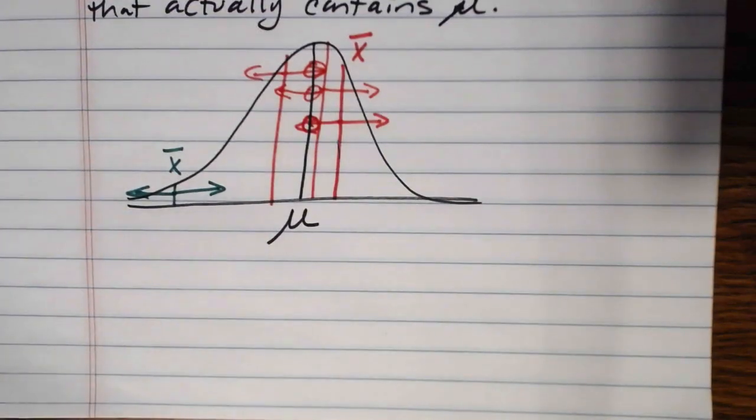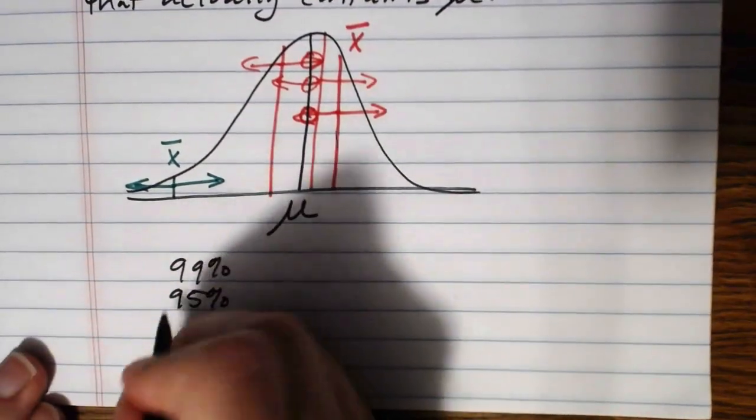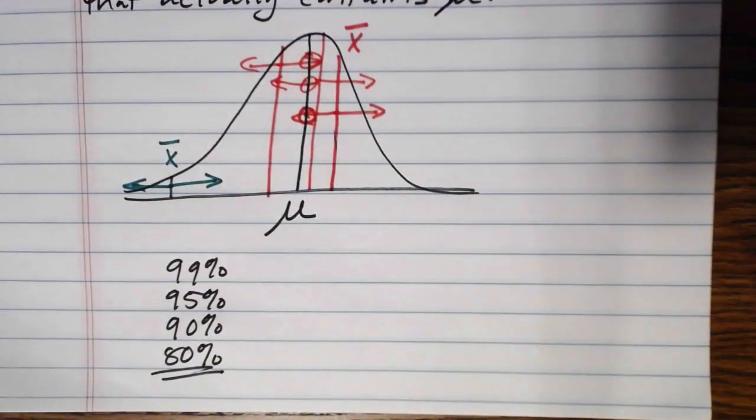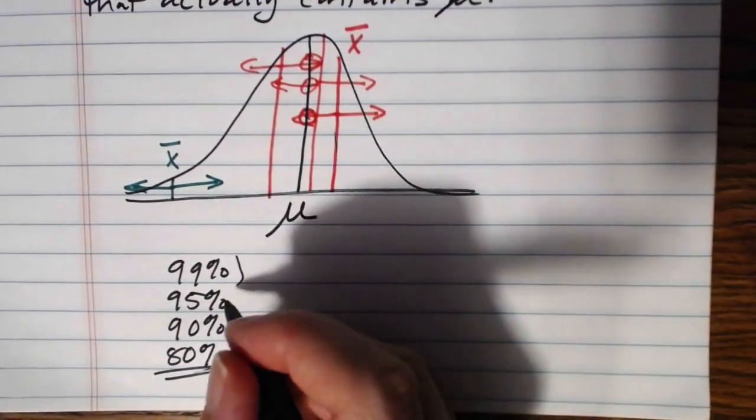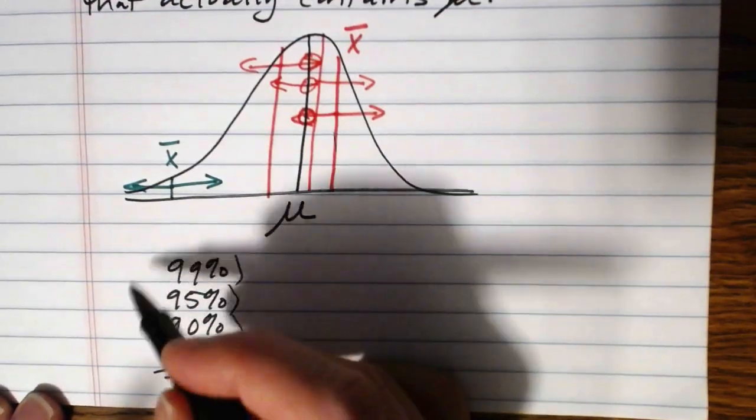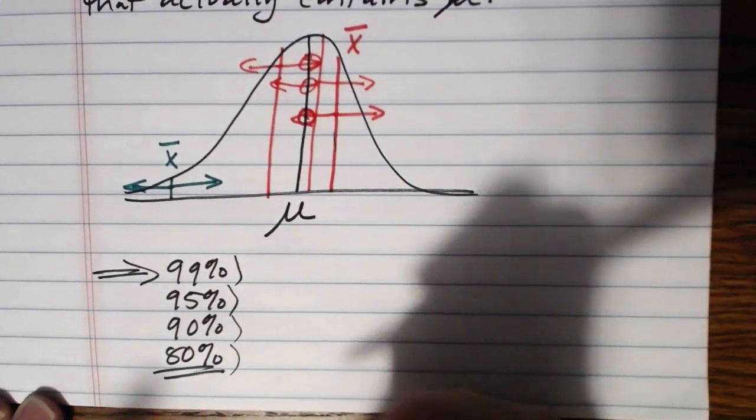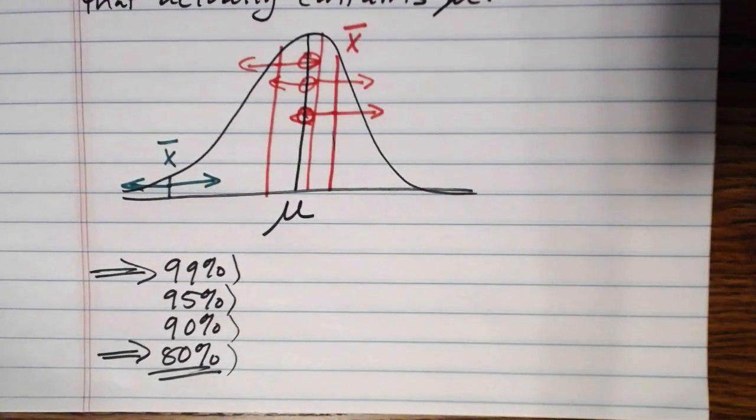Some of the most common levels of confidence that you'll see, 99%, 95%, 90%, sometimes you'll see 80%, you don't usually see a whole lot below 80%. So most of the time we want to be 99% confident that our interval is one of the intervals that contains mu or 95% or 90% or 80%. But basically, the idea here is if I were to calculate many such intervals over and over again, at the 99% confidence level, 99% of them would actually contain mu. At the 80% confidence level, only 80% of them would actually be successful at containing mu. So that's the idea with the confidence level. Now in the next videos, I'll show you how to actually start computing these confidence intervals.